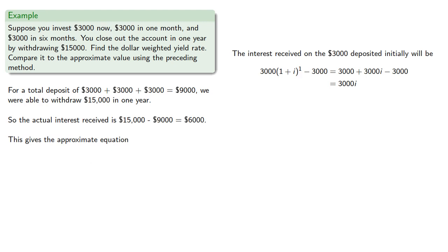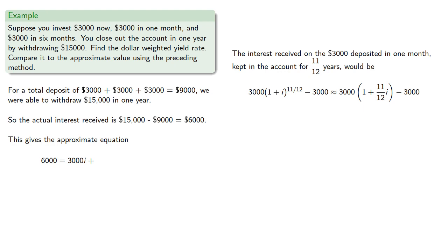Now let's consider the interest received on the $3,000 deposited in one month, which will be kept in the account for 11 twelfths years. So the interest would be the difference. And we'll use our binomial approximation: 1 plus i to the 11 twelfths is approximately 1 plus 11 twelfths i. And we find... Which forms the next part of our interest.